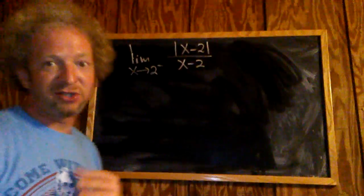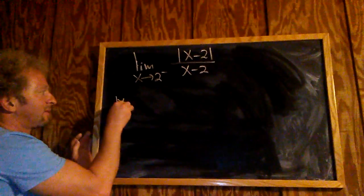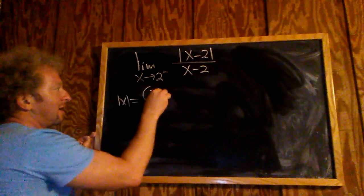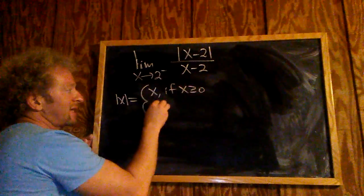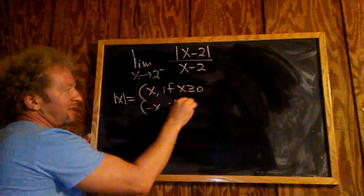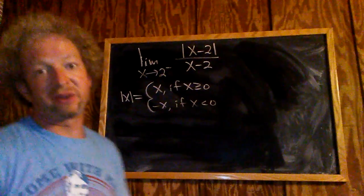Step one is to get rid of the absolute value. Recall that the absolute value of x equals x if x is greater than or equal to zero, and minus x if x is less than zero. That's the definition of absolute value as a piecewise function.